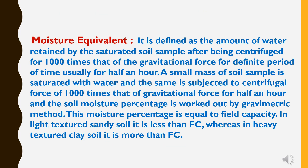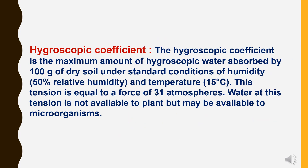Now, moisture equivalent: it is defined as the amount of water retained by a saturated soil sample after being centrifuged at 1,000 times the gravitational force for a definite period, usually half an hour. A small mass of soil sample is saturated with water, subjected to a centrifugal force of 1,000 times gravity for half an hour, and the soil moisture percentage is worked out by the gravimetric method. This moisture percent is approximately equal to field capacity in light-textured sandy soil, but less than field capacity, whereas in heavy-textured clay soil it is more than field capacity.